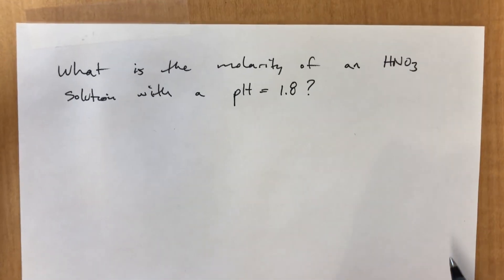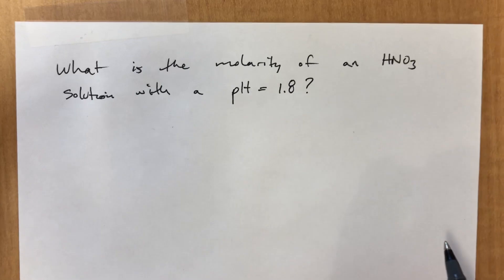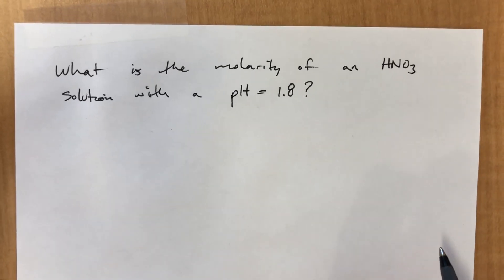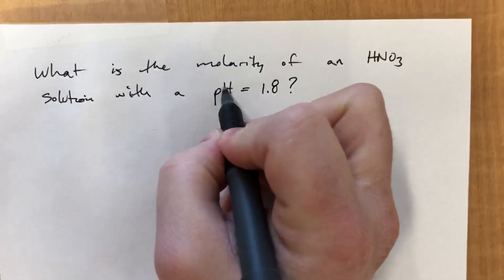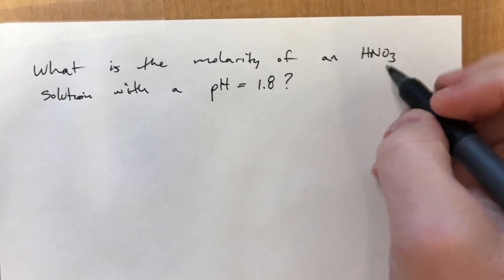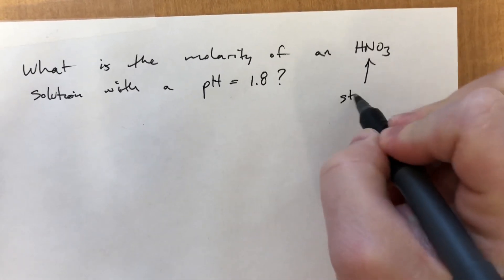Now we are going to figure out the molarity of a nitric acid solution with a pH of 1.8. So this time we know the pH, and we're trying to figure out what the molarity is. This is also a strong acid.